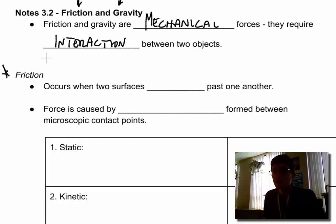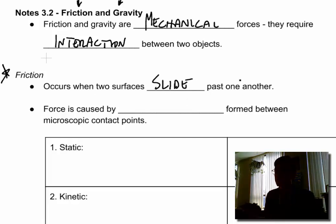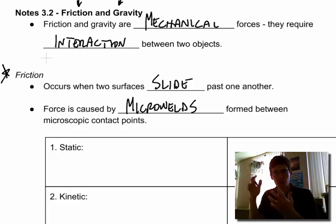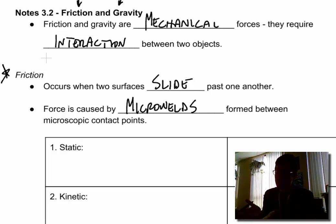Starting with friction, this occurs when two surfaces slide past one another. So you can model friction by taking your hands and sliding them past each other. You feel that heat generated. That's because of the friction. And this is a force caused by these things called micro welds. A micro weld is a sticking point between two objects. Our surfaces aren't perfectly smooth. There's little ridges and jags and things here where two things can stick.